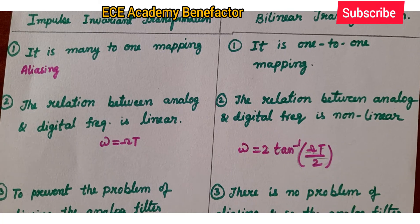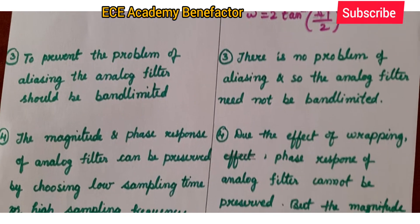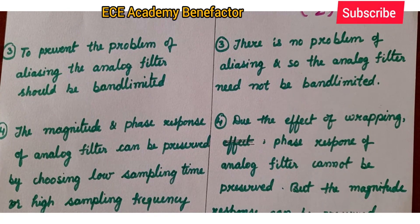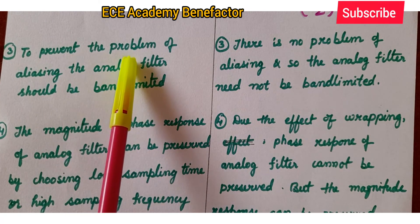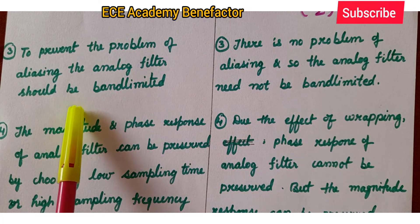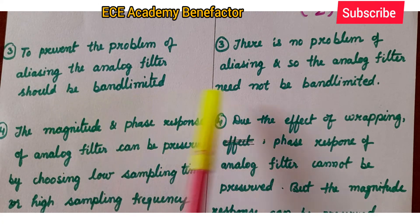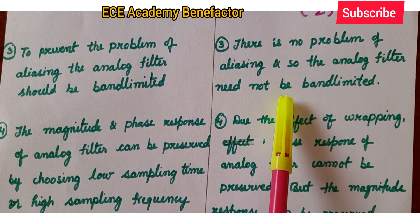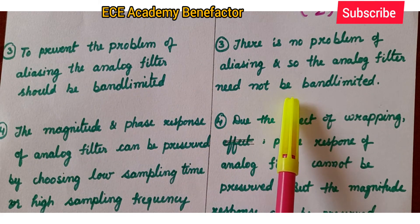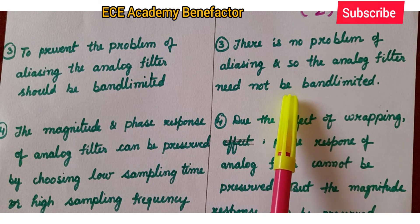The third point: to prevent the problem of aliasing under impulse invariant, the analog filter should be band limited. Under bilinear transformation, there is no problem of aliasing, and so the analog filter need not be band limited.